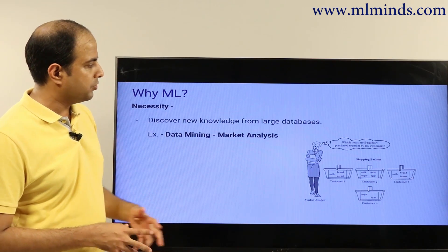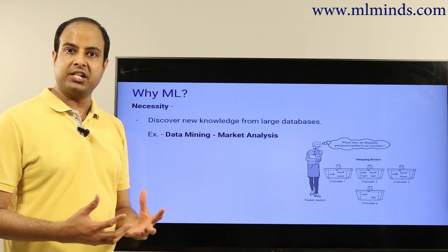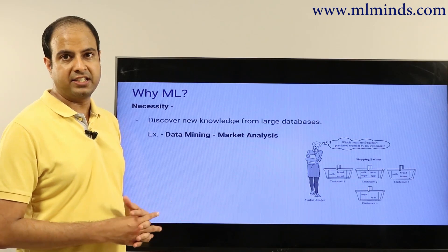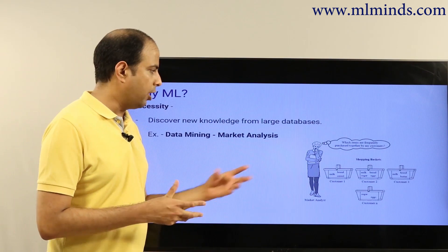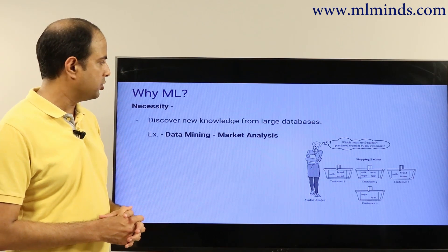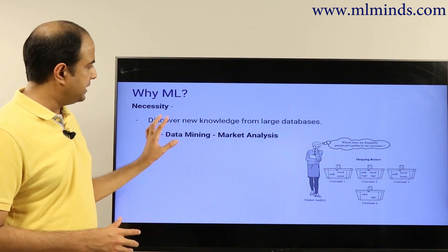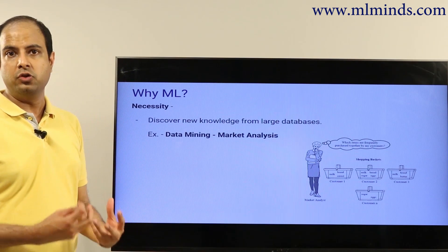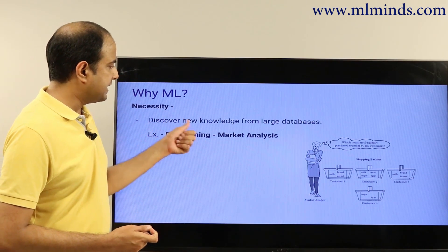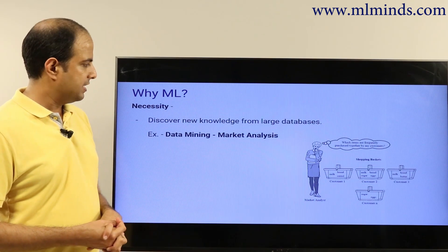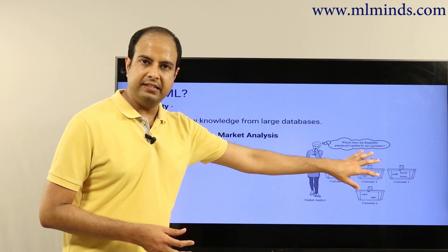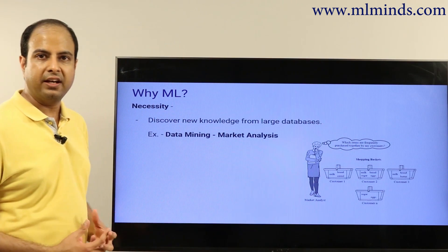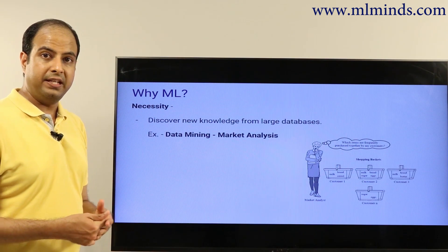From supermarkets you can get a whole bunch of transactional data, where every transaction refers to the real bill a customer gets when they buy something from stores like Walmart or other popular supermarkets. The idea is to discover new knowledge from these large databases. This is where data mining, which is closely related to machine learning, is very useful. You can analyze which things were bought together and understand which items were frequently co-bought — this is a very important pattern.